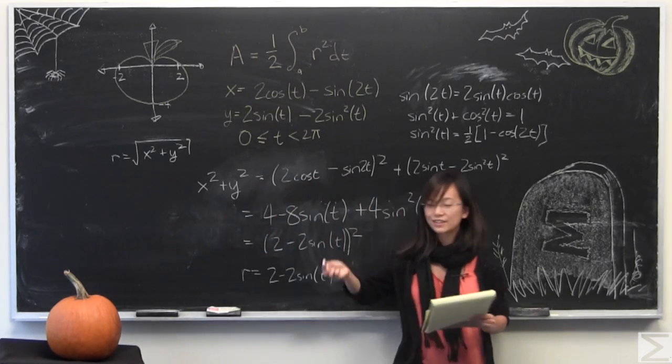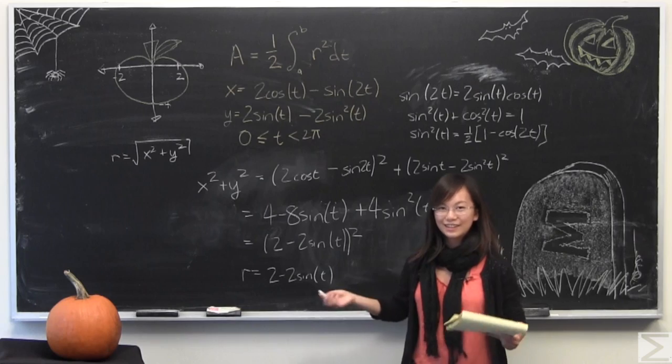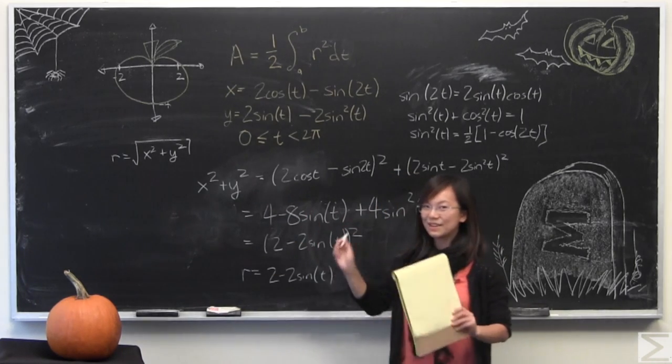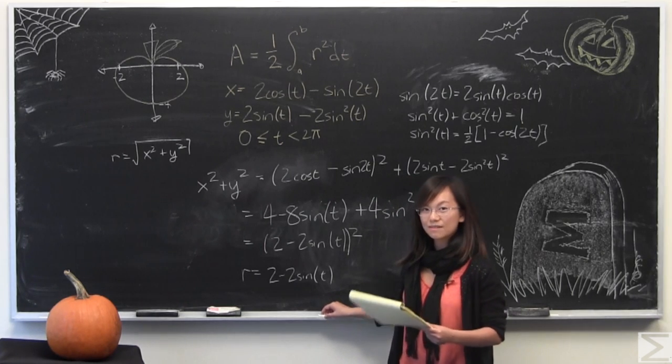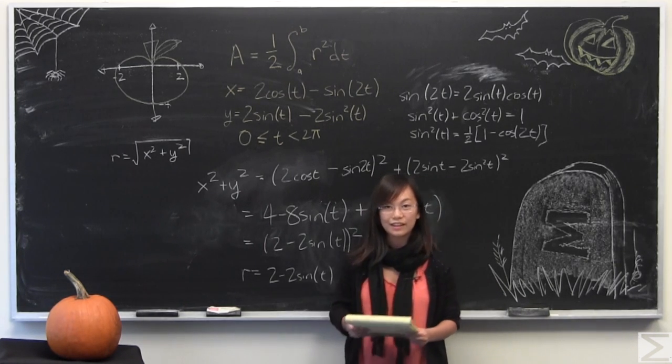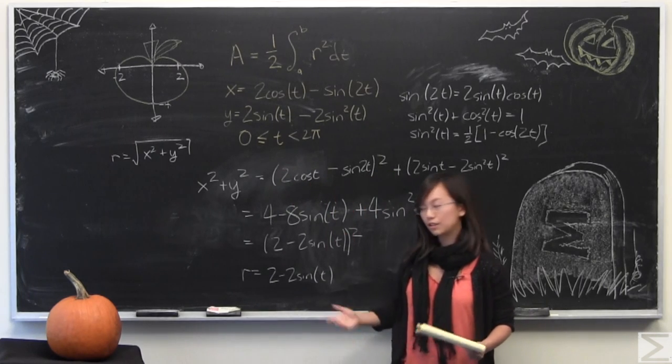So some of you may have already figured this out just by looking at the graph. This is a cardioid. It looks very much like the cross section of a pumpkin I like to say. That's why I kind of gave you this one and from here it's very easy to calculate the area of this because of the equation that I gave you above.